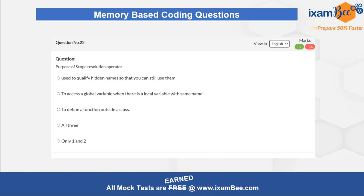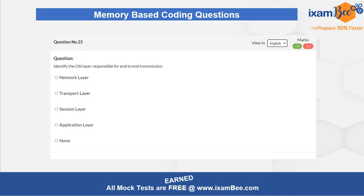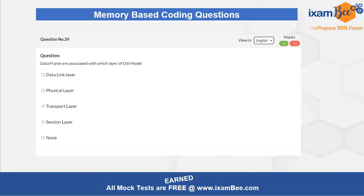The third question is about which OSI layer is responsible for end-to-end transmission. You have to understand all the responsibilities layer by layer and give the correct answer. Question number four is related to the data frame, which is associated with which layer of the OSI model. Every layer has some PDU, and you have to check which PDU is related to each layer — the data frame is one such PDU and you have to map it to the correct layer.